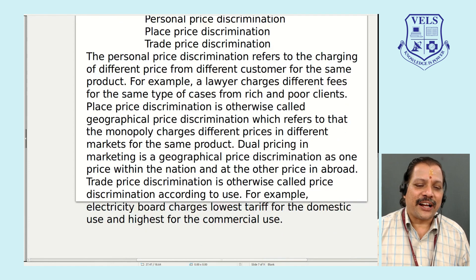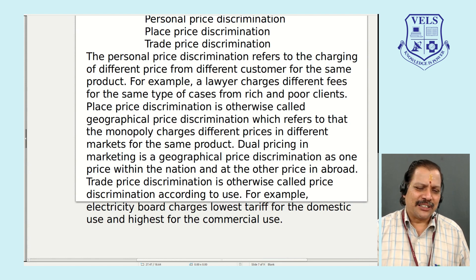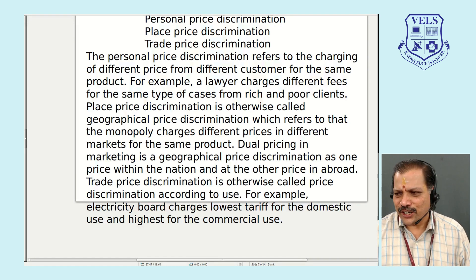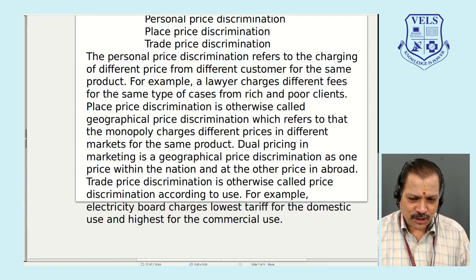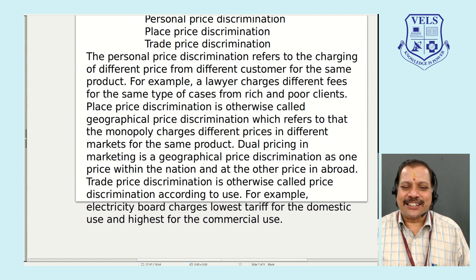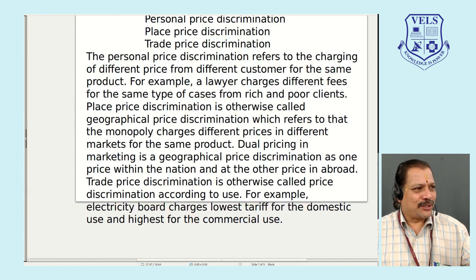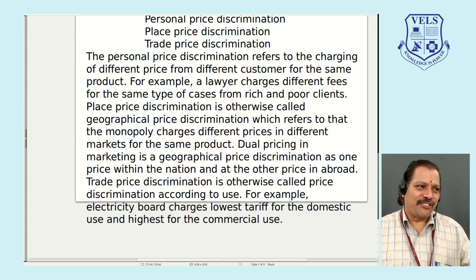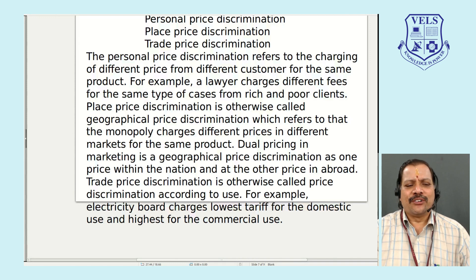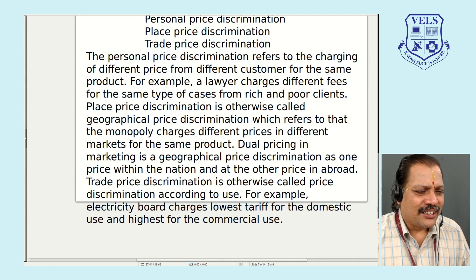The third type is trade price discrimination, which depends upon the use. The best example is electricity charges: for domestic purpose the tariff is less; for commercial purpose the tariff is very high; for farming it may be free. Similarly, wholesale market versus retail market will have different prices because labor is added. Discrimination based on the type of use is called trade discrimination.